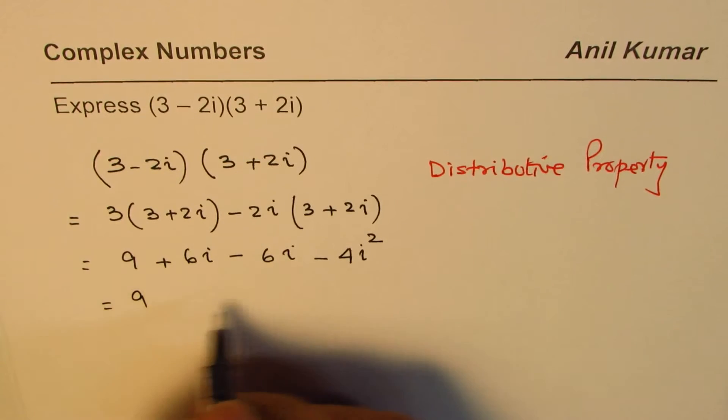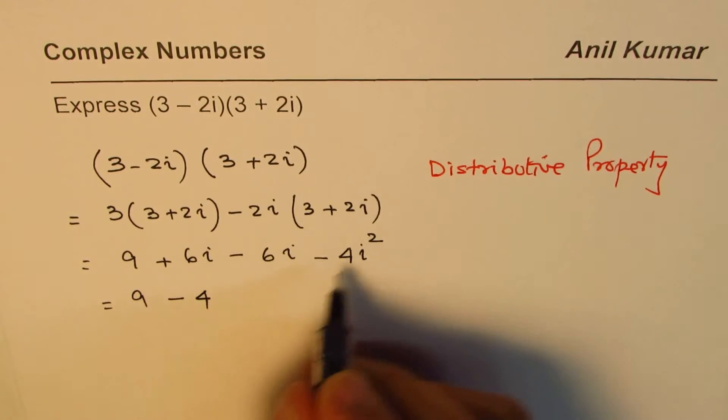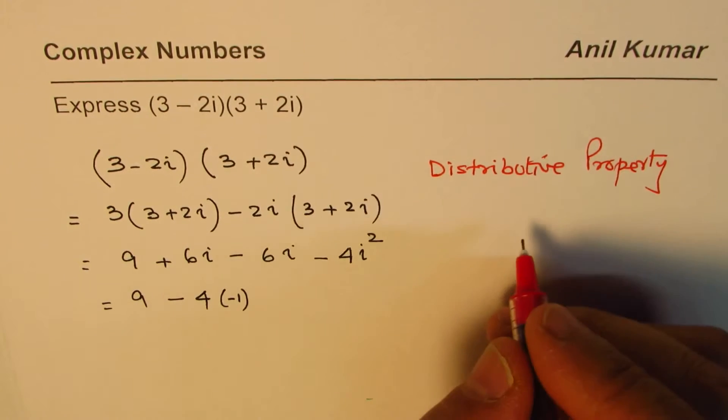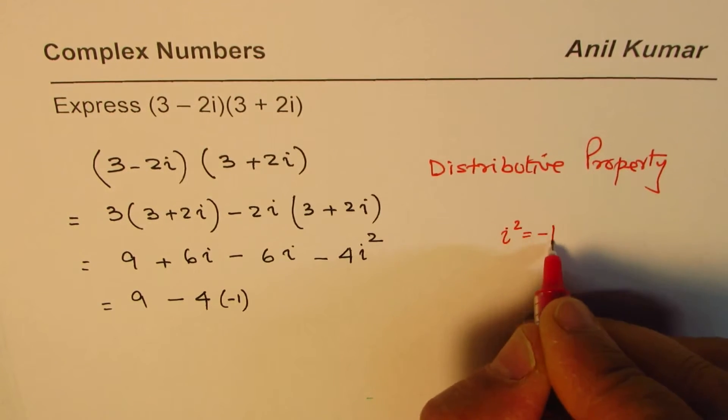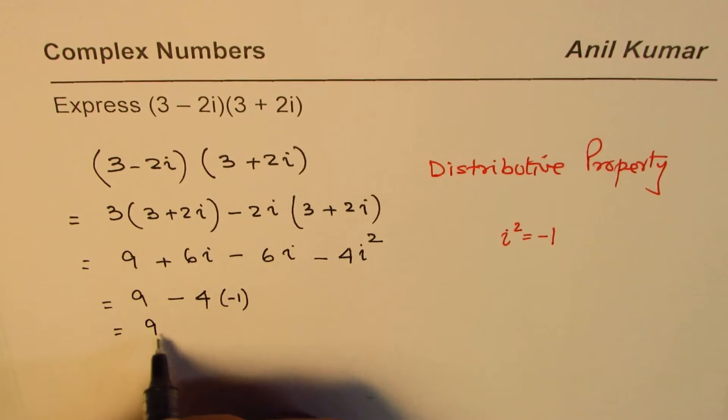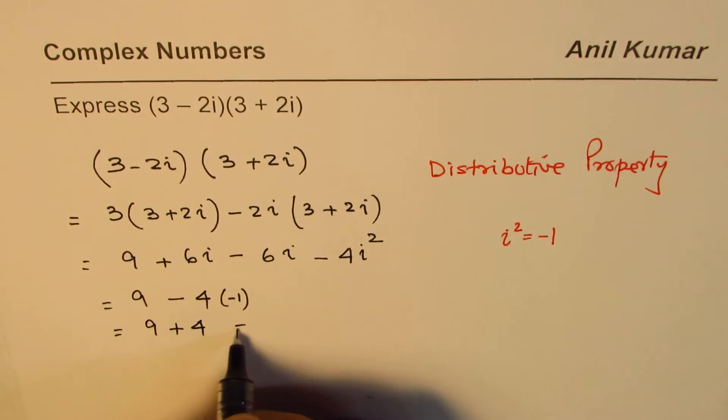So I get 9 minus 4i squared. And what is i squared? i squared is minus 1. So that gives us 9 plus 4, and 9 plus 4 is 13.